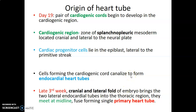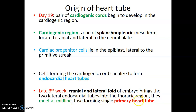The cords canalize — they become hollow and form endocardial heart tubes. At the third week, you have a pair of right and left cardiogenic cords. The cranial and lateral folding of the embryo brings the two lateral endocardial tubes into the thoracic region. The cranial fold also moves the cardiogenic area from the portion cranial to the neural plate into the thoracic region. They meet at the midline, and the two endocardial tubes fuse to form a primary heart tube.